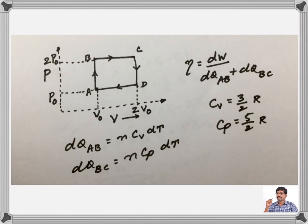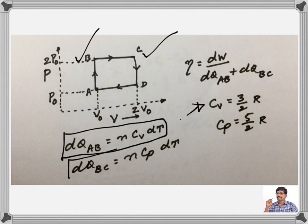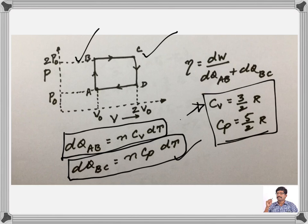The AB process is an isochoric process, where the heat absorbed during this process is dQ = nCvdT, where Cv is 3/2 R. And BC, the process BC is an isobaric process, then dQ is nCpdT, where Cp is 5/2 R because it is helium, so monatomic.